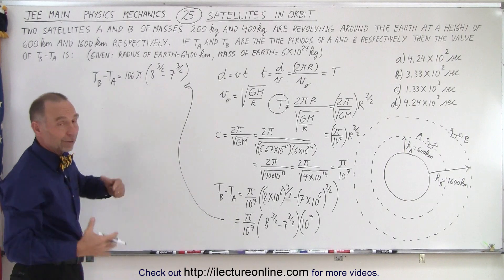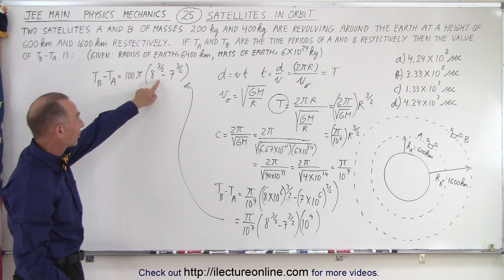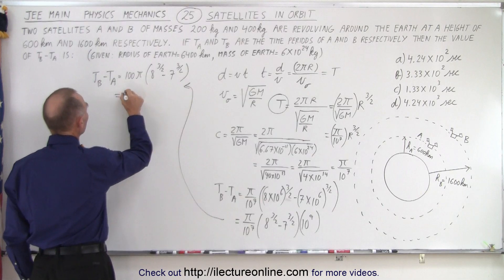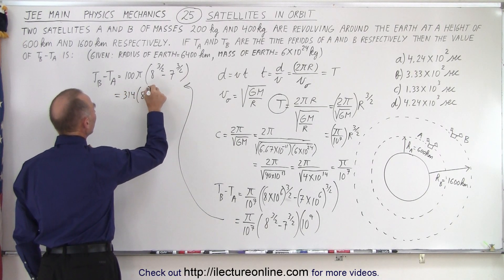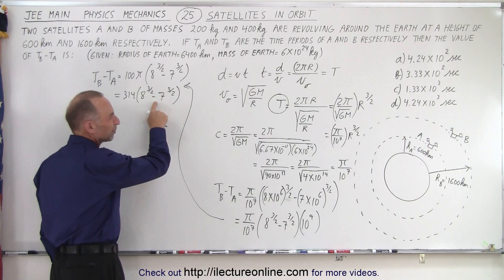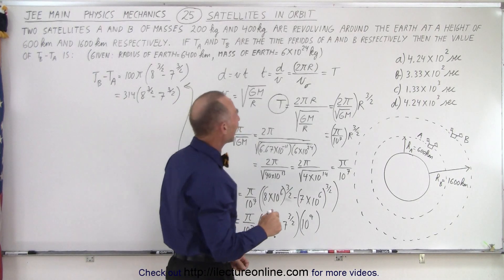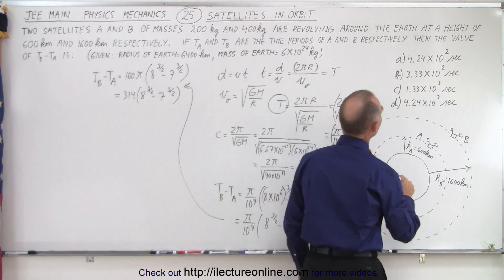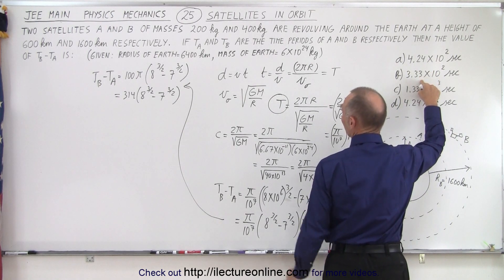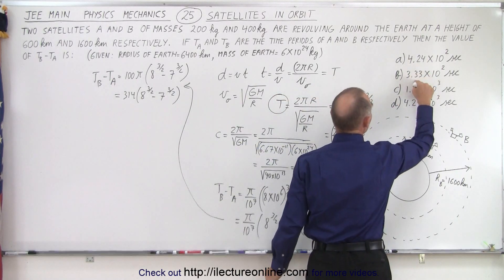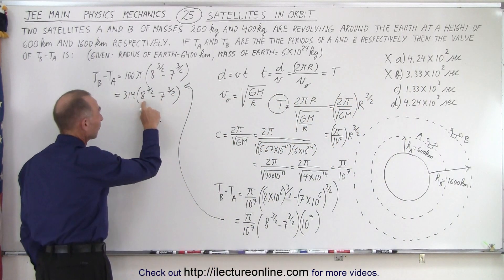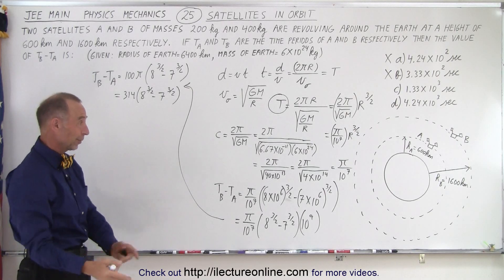So 100π is 314. We need to multiply this by the difference between 8 to the 3/2 and 7 to the 3/2. Looking at our answer choices, this will be 314 times something greater than 1, so anything less than 314 is not a possible answer. Answers A and B are probably not correct since we expect the result to be significantly larger. Either of the remaining two could be right. Without a calculator, we have to figure out the difference quickly — in about 3 minutes for a JEE exam.